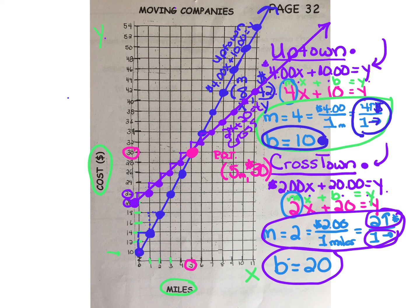But what about if the distance is less than 5 miles? Well, our blue line, Uptown, is clearly the cheaper company if your distance is less than 5 miles. However, if your distance is greater than 5 miles, you can see that Crosstown would be the better buy.